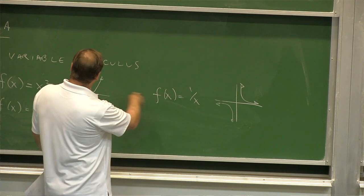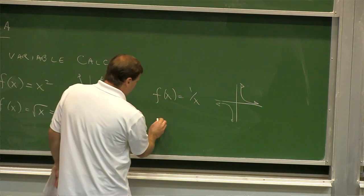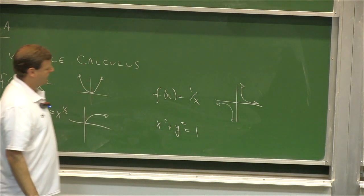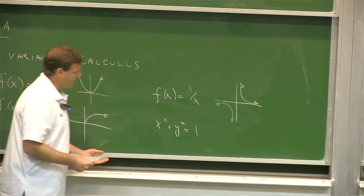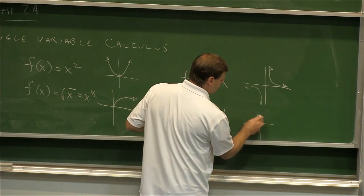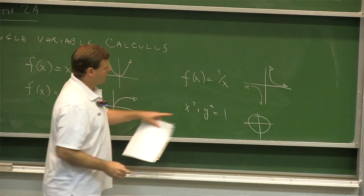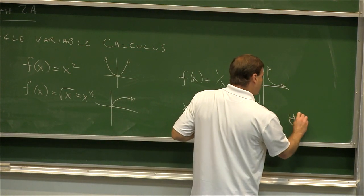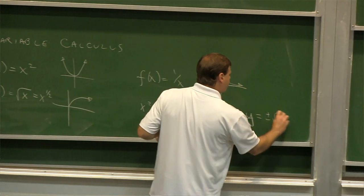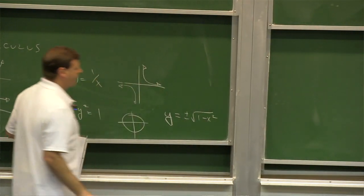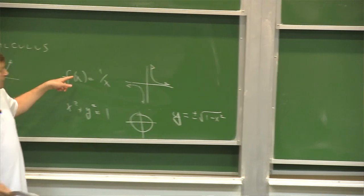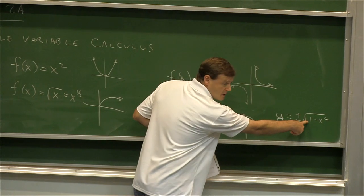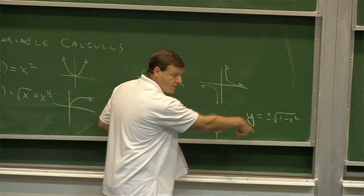Another one: x squared plus y squared equals 1. That's the unit circle. If you solve for y, you get y equals plus or minus square root of 1 minus x squared. So if I wanted to write it as a function, the top half of the circle is the positive square root and the bottom half is the negative square root.